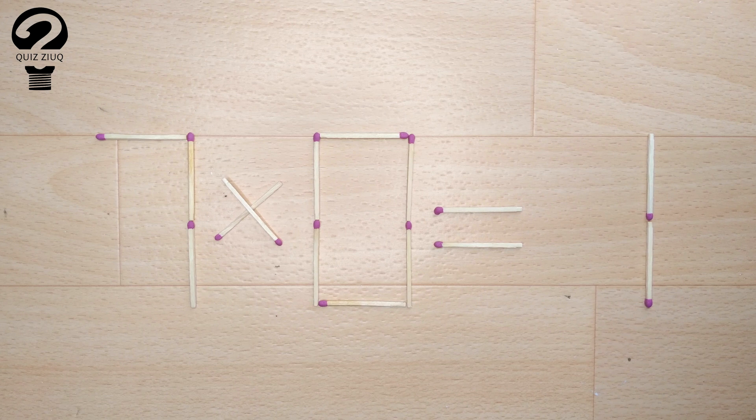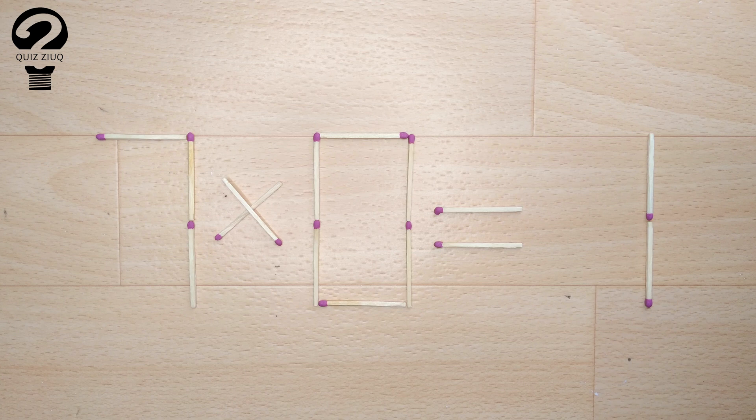Here's the next puzzle. We have this equation, seven times zero equals one.